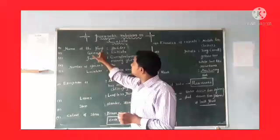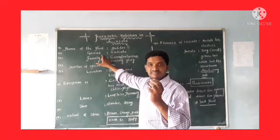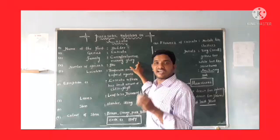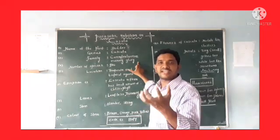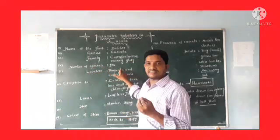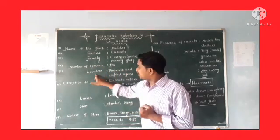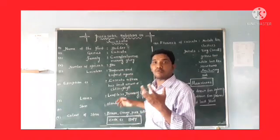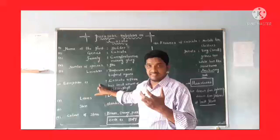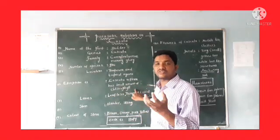Name of the plant is Dodder. Genus is Cuscuta. Family is Convolvulaceae or Morning Glory Family. Number of species: nearly 170 species. Location: Temperate and Tropical regions. Exception is, Cuscuta Reflexa has a small amount of chlorophyll.